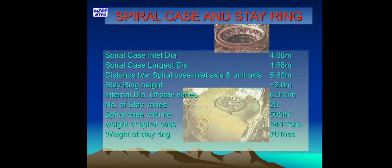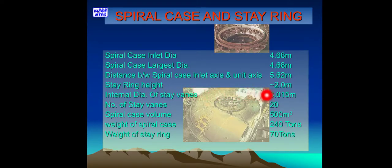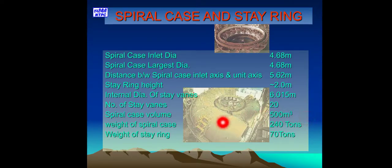Spiral case and stay ring specifications: Spiral case inlet diameter 4.68 m; largest diameter 4.68 m; distance between spiral case inlet axis and unit axis 5.62 m. Stay ring height 2.0 m; internal diameter of stay vanes 6.015 m; number of stay vanes 20. Spiral case volume 500 m³; weight of spiral case 240 t; weight of stay ring 10 t.